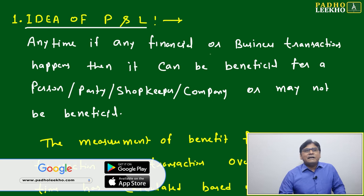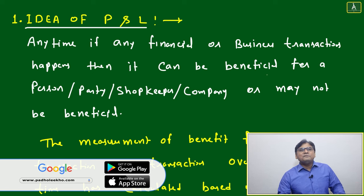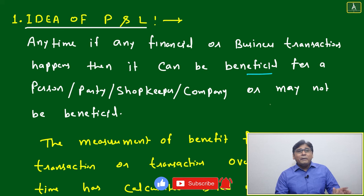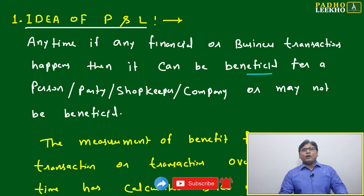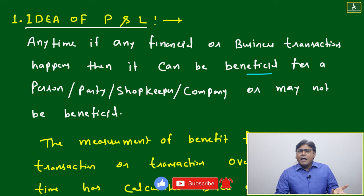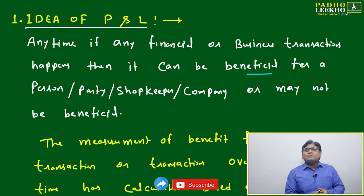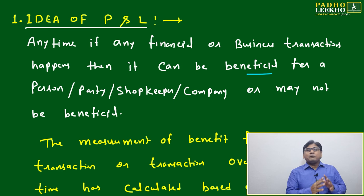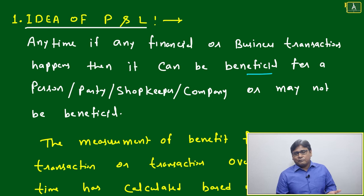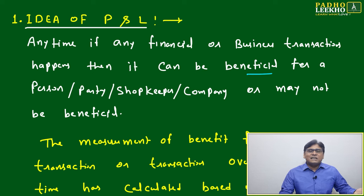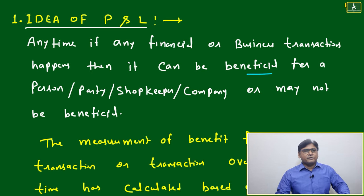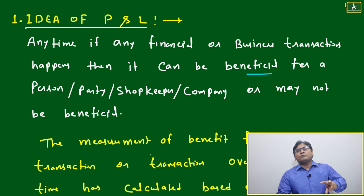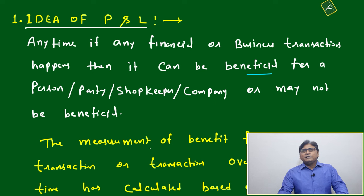Any financial or business transaction can be beneficial for a shopkeeper or company, or may not be beneficial — profit is not always guaranteed. In many companies, individual transactions may show a loss, but overall cumulatively they are making a profit. Maybe 20 transactions are at a loss but 80 are profitable, so we have to look at the broader picture to see if we are finally gaining profit.